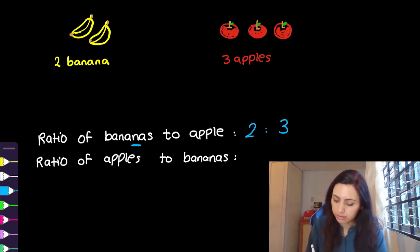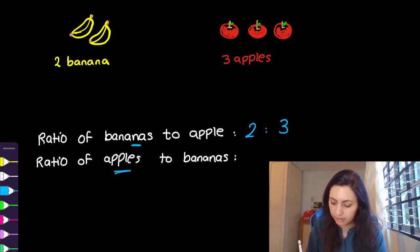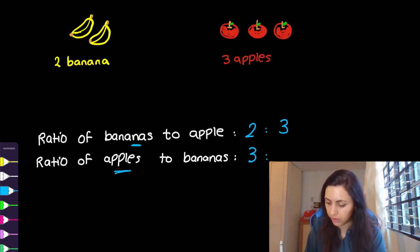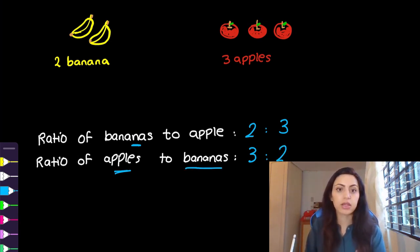The second one: ratio of apples to banana. So first we're asked about the apple, so we put three. Then banana — we have two. So apple to banana is 3:2.